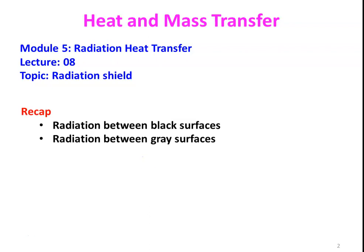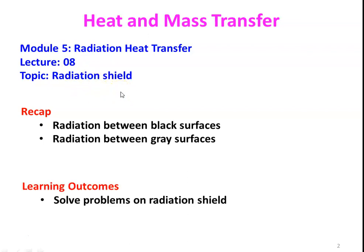We recap from the previous lecture: we discussed the radiation heat transfer between two black surfaces and the radiation heat transfer between two grey surfaces, and we solved a few problems on heat transfer between black surfaces and grey surfaces. Today we are going to discuss the radiation shield. At the end of the lecture, the student will be able to solve problems on the radiation shield, understand what it is, how it affects radiation heat transfer, and solve problems on their own.